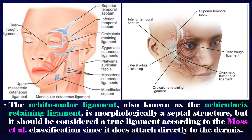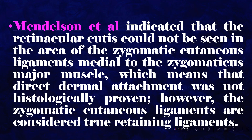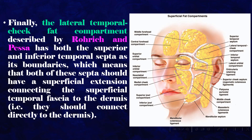The orbitomalar ligament, also known as the orbicularis retaining ligament, is morphologically a septal structure, but should be considered a true ligament according to the Moss et al. classification since it does attach directly to the dermis. The zygomatic cutaneous ligaments located posteriorly along the zygomatic arch take a septal form, while the anterior ones over the junction of the arch and body of the zygoma take a more cylindrical form. Mendelssohn et al. indicated that retinacular cutis could not be seen in the area of the zygomatic cutaneous ligaments medial to the zygomaticus major muscle, meaning direct dermal attachment was not histologically proven; however, the zygomatic cutaneous ligaments are still considered true retaining ligaments. Finally, the lateral temporal cheek fat compartment described by Rorick and Pessa has both the superior and inferior temporal septa as its boundaries, which means both septa should have a superficial extension connecting the superficial temporal fascia to the dermis.